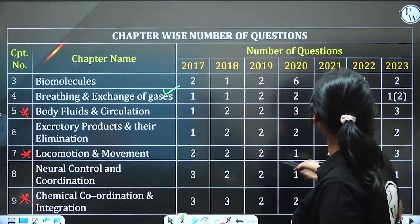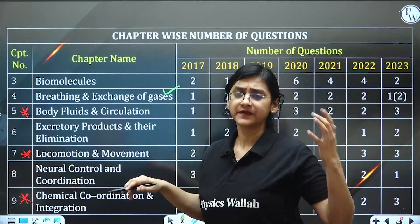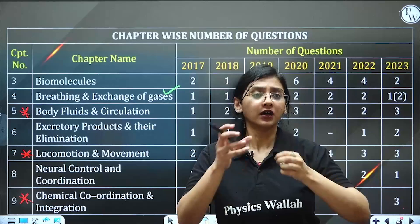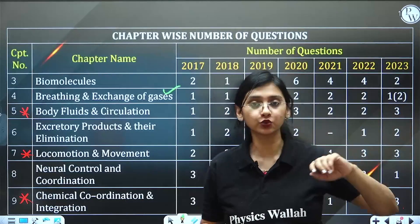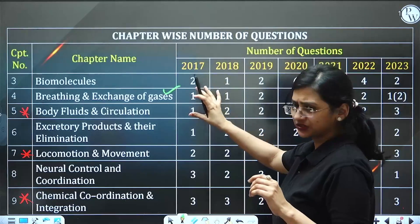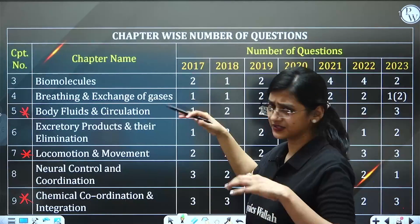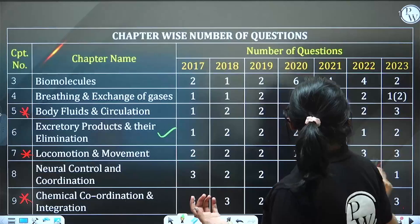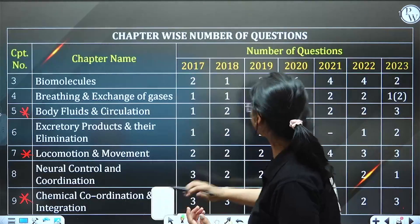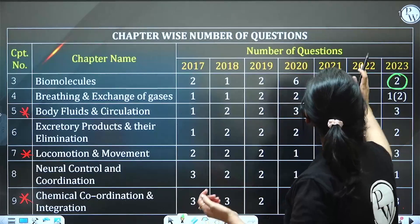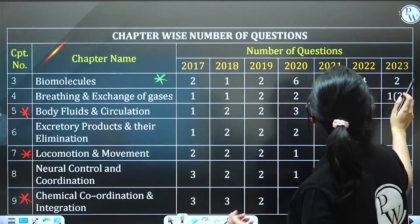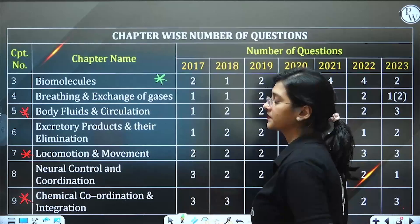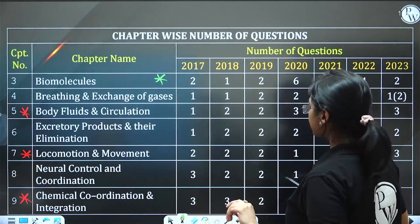For Breathing and Exchange of Gases, you can expect around one to two questions, though mainly just one, so it is not really a top priority. Excretory Products and Elimination has one to two questions expected, and Neural Control and Coordination just one question. Biomolecules is the next important chapter — at least two questions were asked last year, and the year before that, four questions were asked. So Biomolecules is the next important chapter to study after the top five.